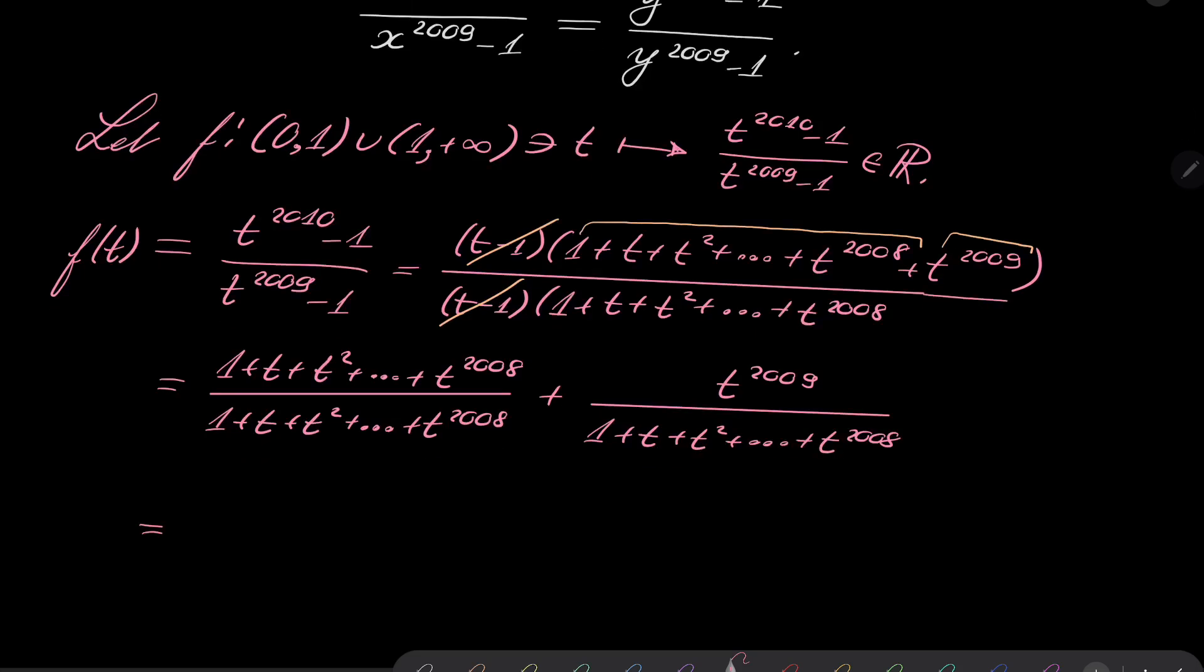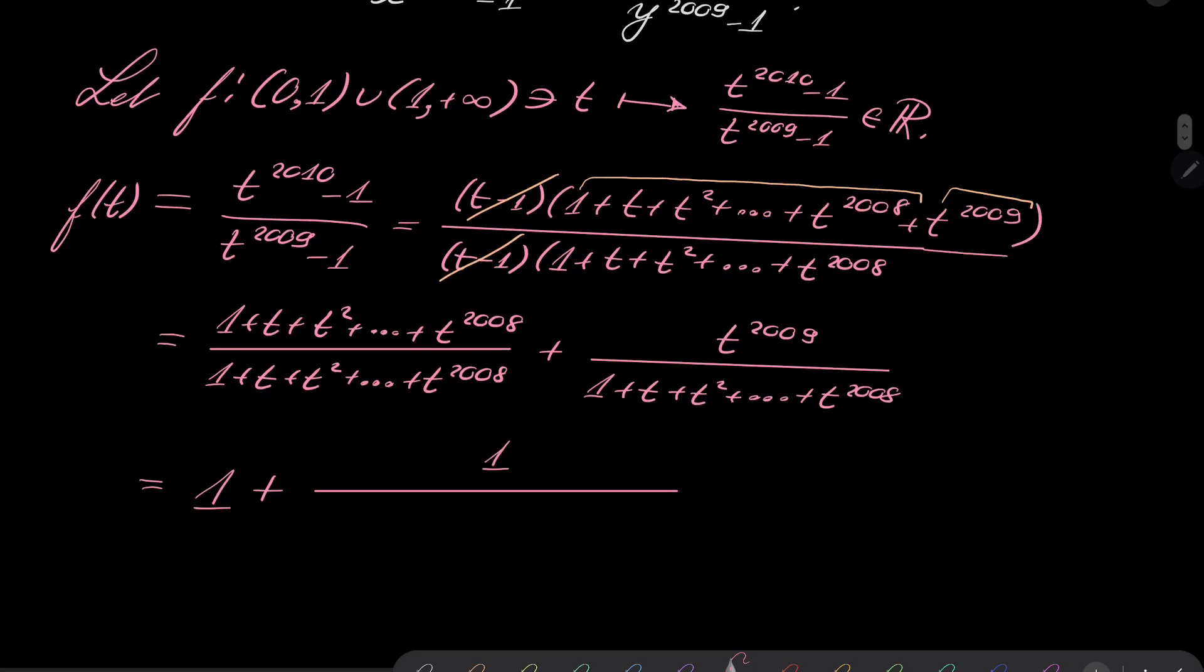The first expression is just 1, and the second expression can be rewritten as 1 over (1/t^2009 + 1/t^2008 + ... + 1/t^2 + 1/t). You may say this is quite a complicated way of writing it, but it has two advantages.